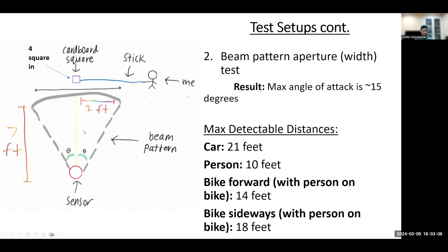So by taking an arc tangent of 2 over 7 I found this angle of attack which is approximately 15 degrees. Then I tested the sensor with the car, person and bike. And these are the max detectable distances for those.